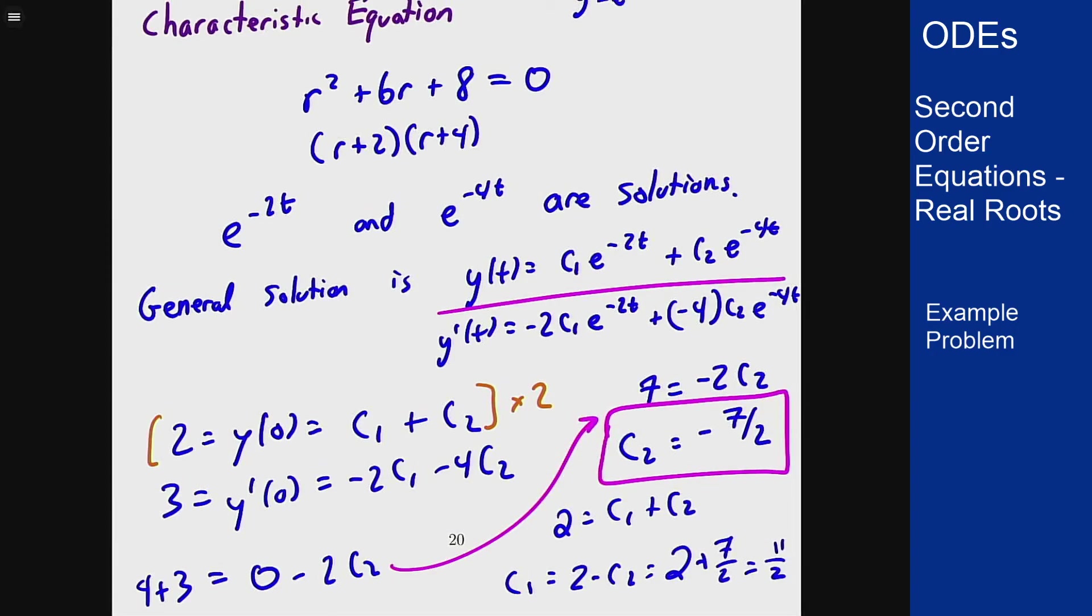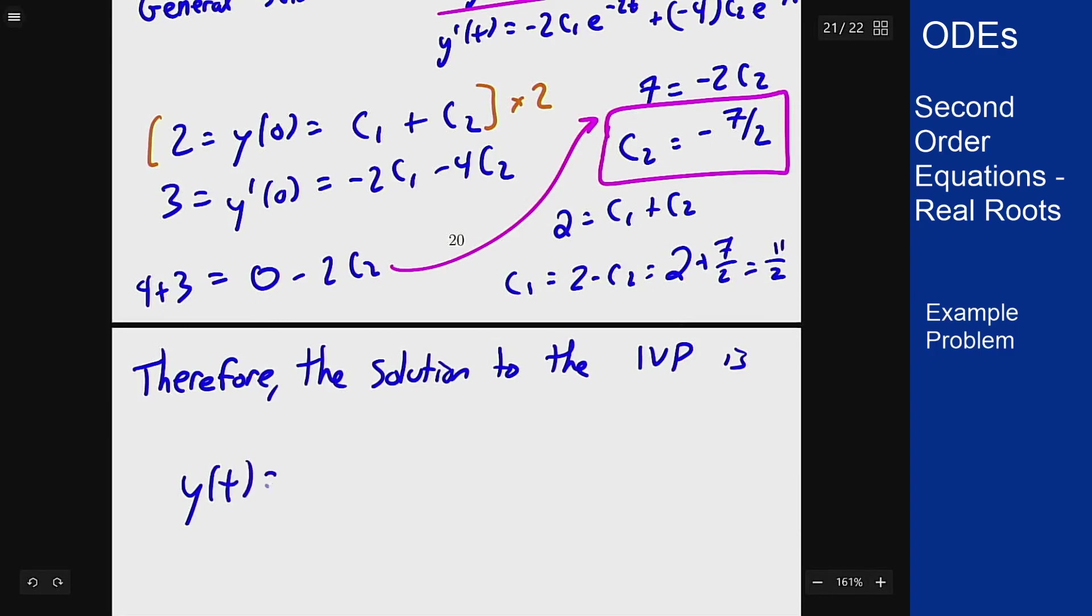Therefore the solution to the initial value problem is y of t equals 11 over 2 times e to the minus 2t minus 7 over 2 times e to the minus 4t.